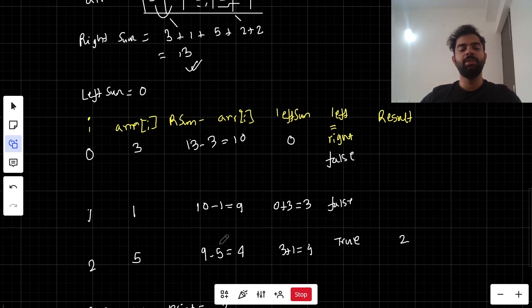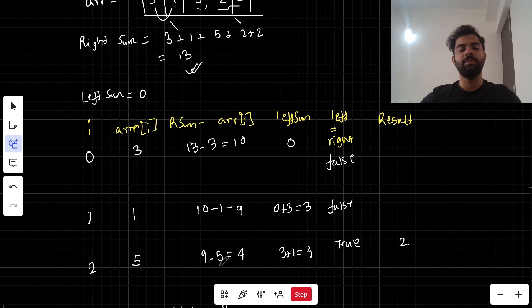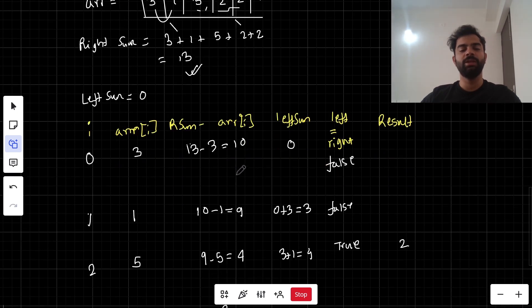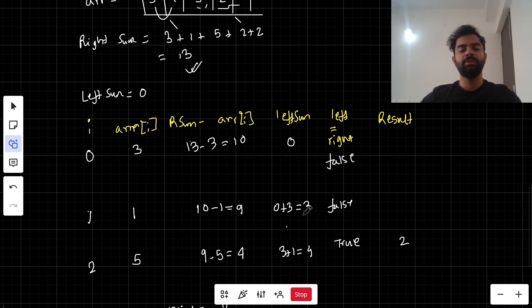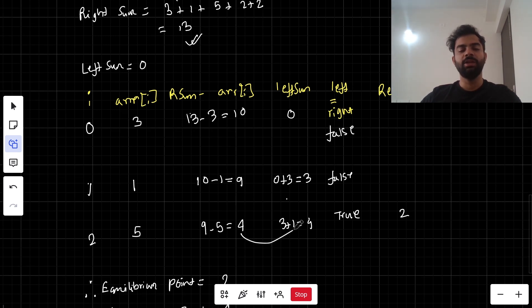The previous difference minus the element is 4. Left sum equals 3 plus 1 because this element has to be added, which equals 4.